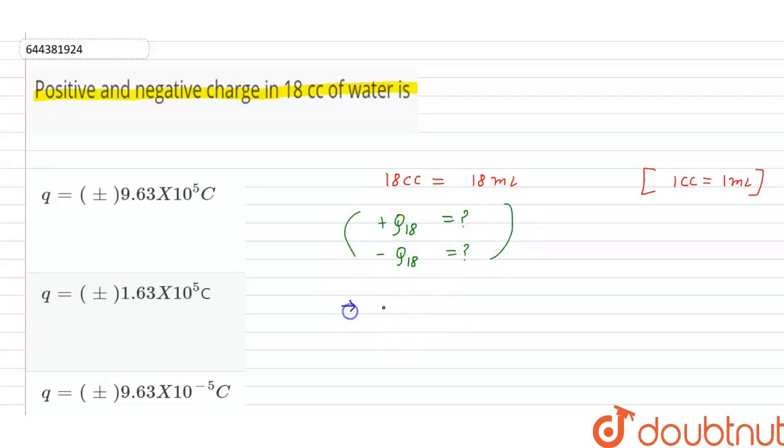We know that density of water, rho w, is equal to 1 g divided by milliliter. So the mass of given amount of water, taking small mw, is 18 ml into 1 g divided by milliliter, which is equal to 18 g.